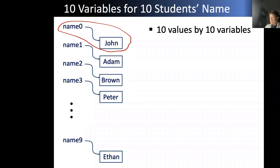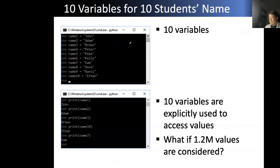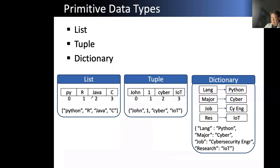What if we have millions? Someone says we can do the same. But is there any better way? Python developed three types of primitive data types: list, tuple, and dictionary. List, tuple, and dictionary.